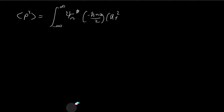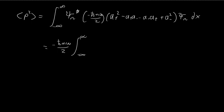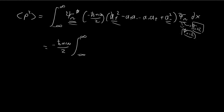We have terms involving a-minus squared, minus a-plus a-minus, and minus a-minus a-plus applied to ψ_n. The a-plus squared term raises ψ_n to something proportional to ψ_{n+2}, and the a-minus squared term lowers it to ψ_{n-2}. Integrating these against ψ_n gives 0 by orthogonality — just as in example 2.5 — so we can ignore those two squared terms.